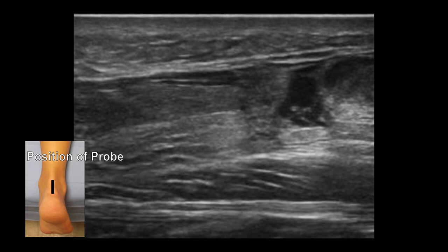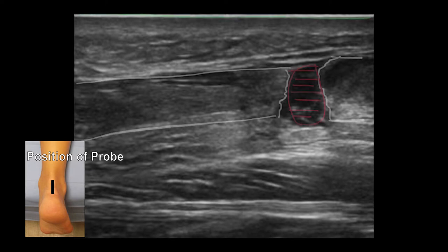We can see here a complete Achilles tendon rupture, which is seen in the long axis view. As indicated by the white, you can see the normal Achilles tendon with its echogenicity and fibrillar architecture. Separating the two ends is hypoechogenicity, which could be the space between the tendons, but may also be hemorrhage from the trauma that took place in order to cause this rupture.